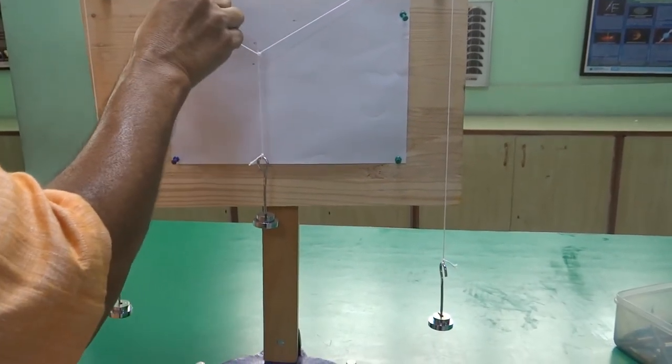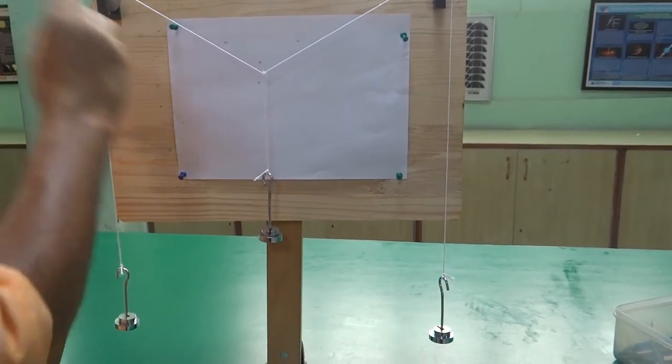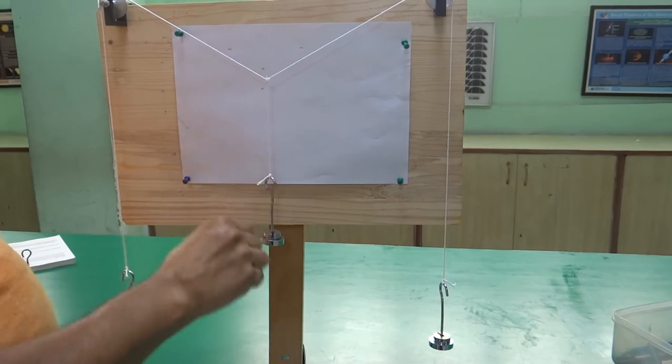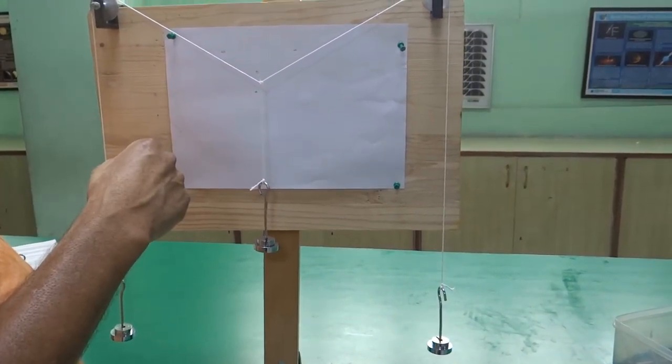When you join this point, this will give you the direction of force or tension acting along this string. And these 2 points will give you the direction of force acting downward.